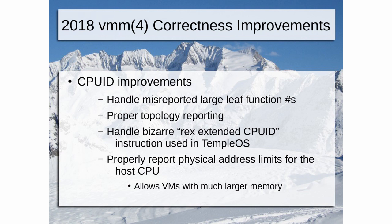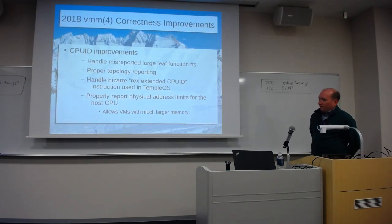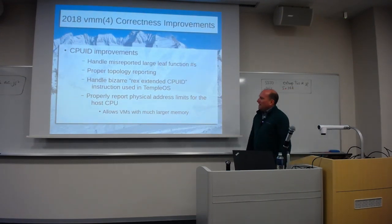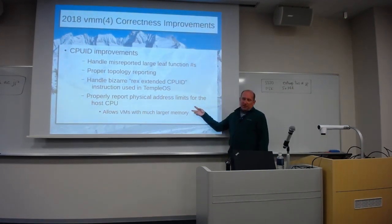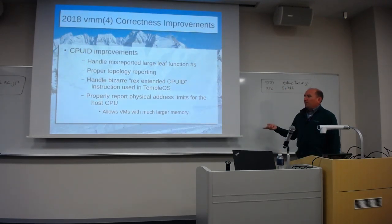Back in January, not related to hypervisors or VMs at all, I increased the amount of physical memory limits for an OpenBSD machine. We previously supported up to 512 gigabytes of physical memory on an OpenBSD host; that has now been extended to 2 terabytes, and you can crank the knob as high as you want. But I noticed while teaching my virtualization class — we were talking about physical address sizes — that VMM was reporting back a much smaller address range than the host actually had. So demoing this live ended up showing there was a bug, and we now properly report the physical address limits for the host CPU, which allows VMs with much larger memory.